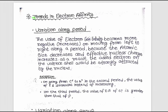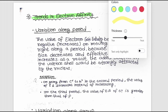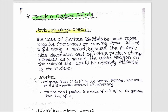Now let us look at trends in electron affinity. Variation along a period: the value of electron gain enthalpy becomes more negative on moving from left to right along the period, because the atomic size decreases and the effective nuclear charge increases. As a result, the added electron on the valence shell is strongly attracted by the nucleus.